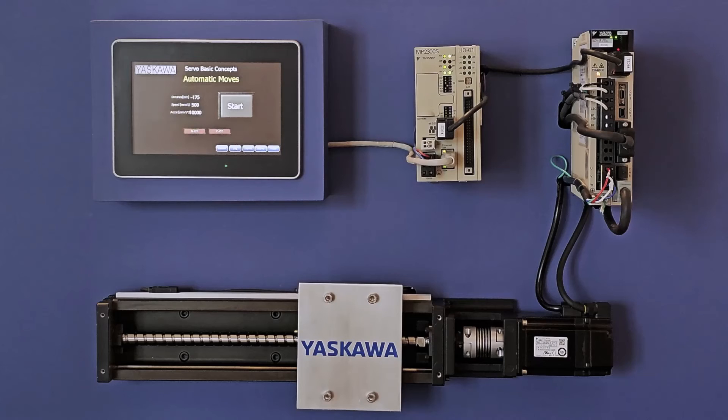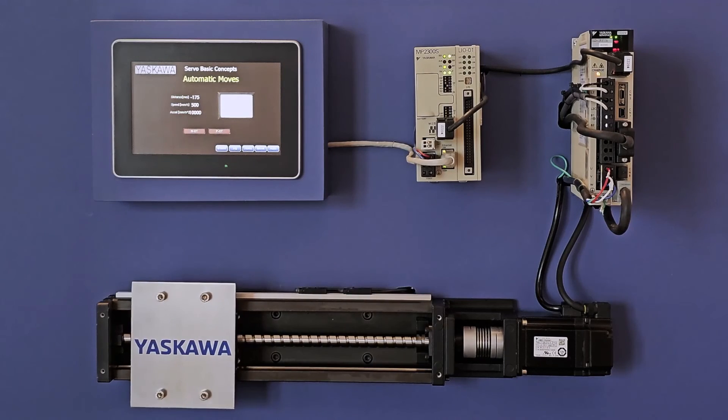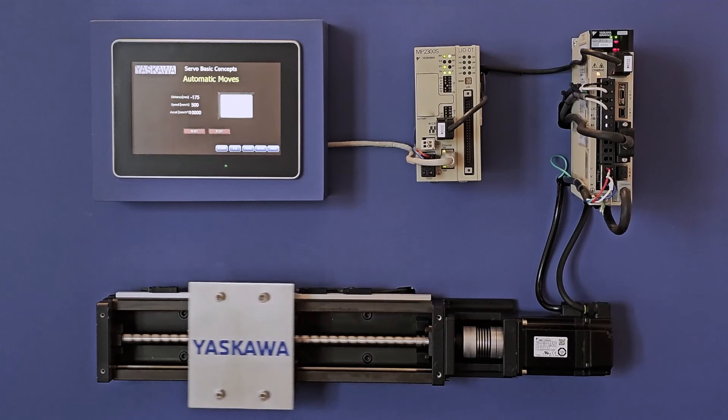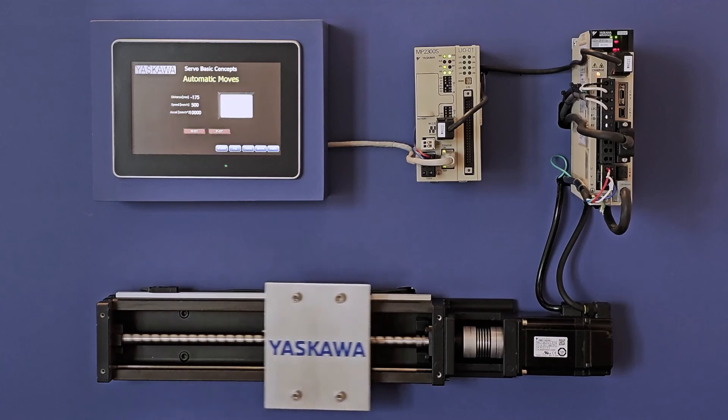After the servo motor is energized, the controller typically requires the operator to press some type of a start button. At this point, the controller will command motion according to its program.